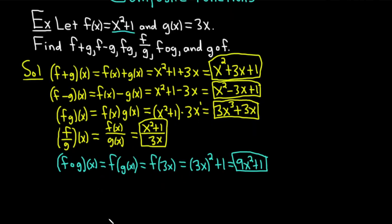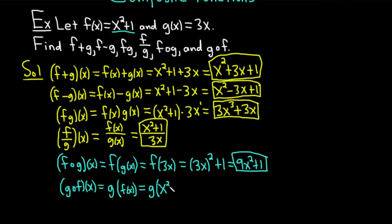Lastly, we have (g∘f)(x). This is equal to g of f of x. It's easy to memorize — it's just the order you see it: (g∘f)(x) is g of f of x. You always replace the inside piece first. F of x is x squared plus 1, so we put that there. Then g is 3x, so this whole expression x squared plus 1 is our x — we're plugging it in. So it's 3 times (x² + 1), and distributing the 3 gives 3x² + 3.